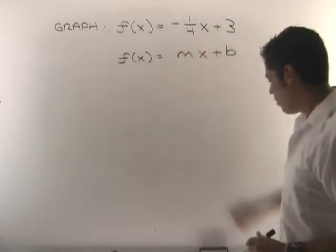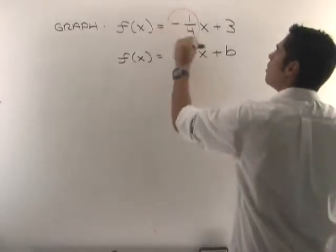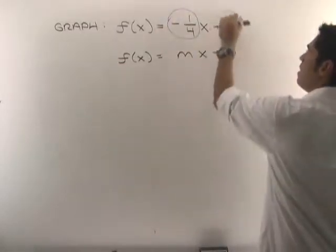Here, m is the number that's in front of x, which in this case is negative one-fourth, and b here is 3.